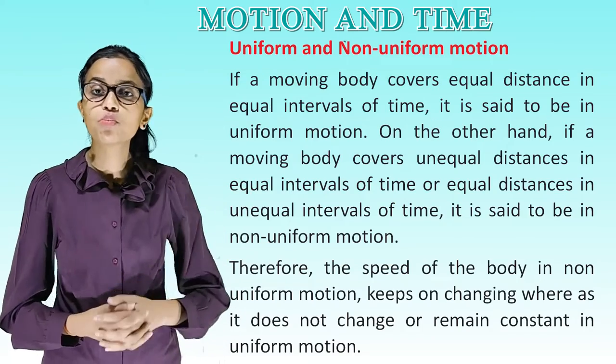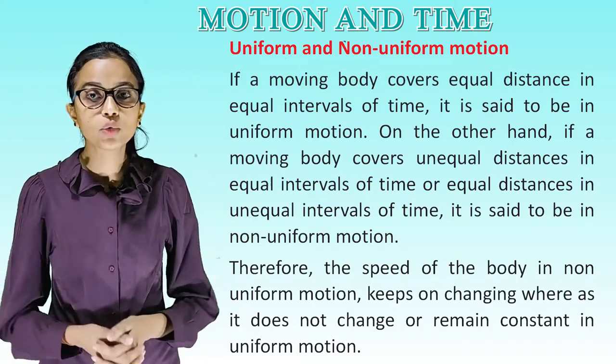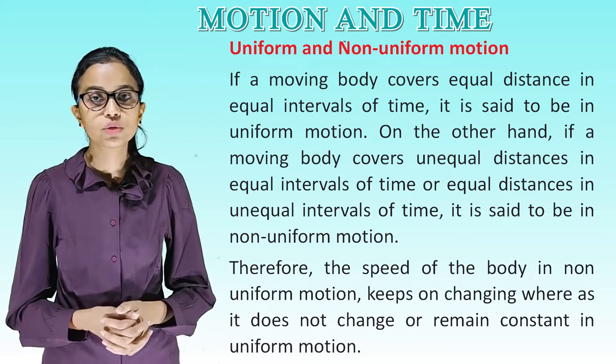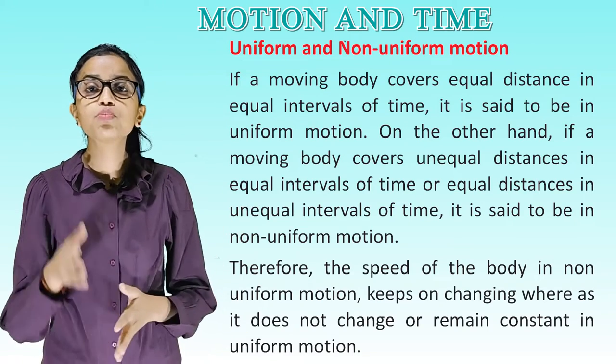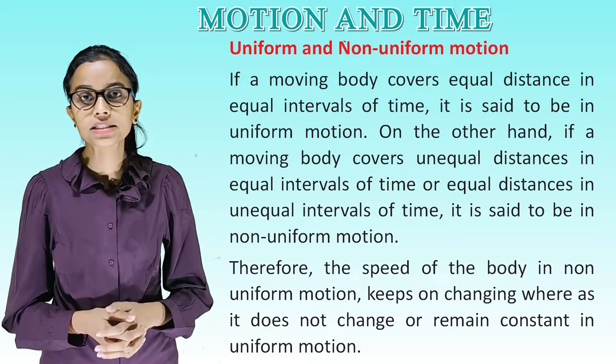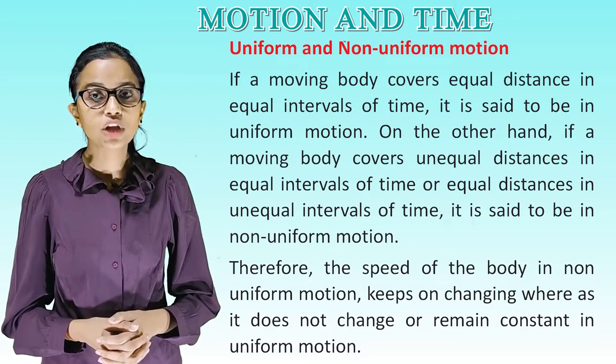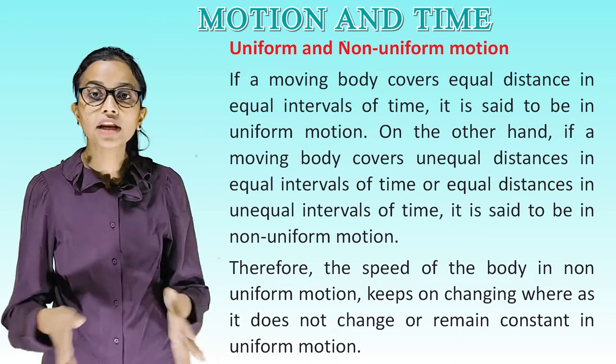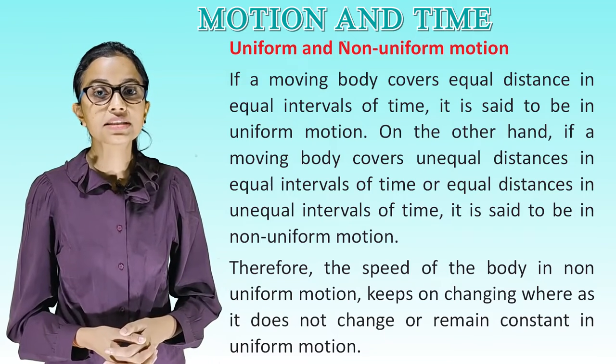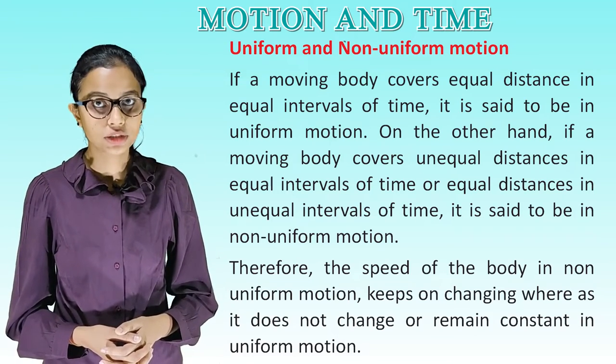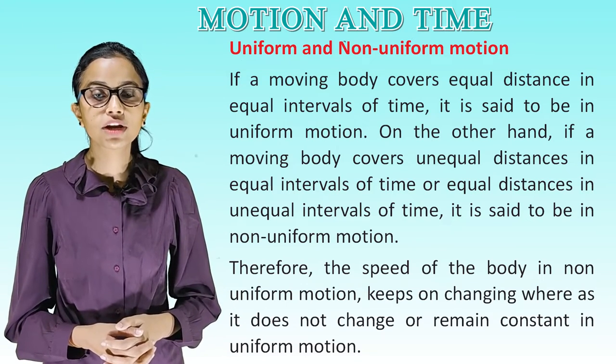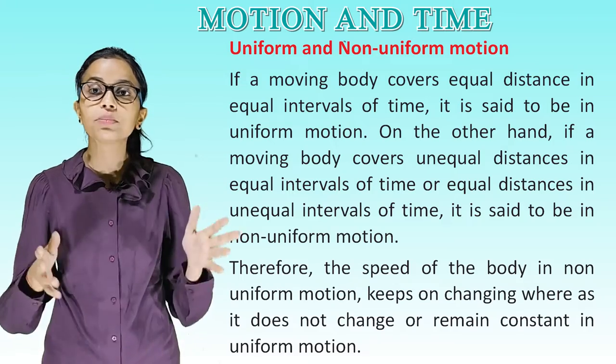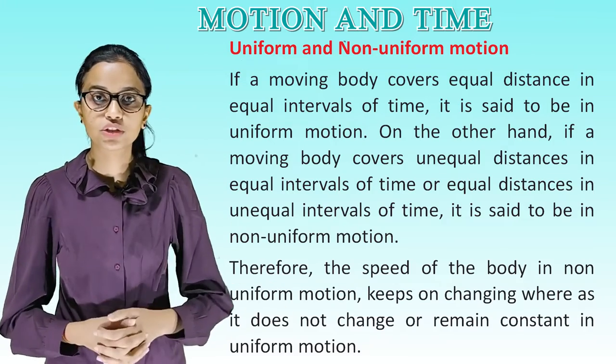Uniform and non-uniform motion. If a moving body covers equal distances in equal intervals of time, it is said to be in uniform motion. On the other hand, if a moving body covers unequal distances in equal intervals of time or equal distances in unequal intervals of time, it is said to be in non-uniform motion. Therefore, the speed of the body in non-uniform motion keeps on changing whereas it does not change or remains constant in uniform motion.